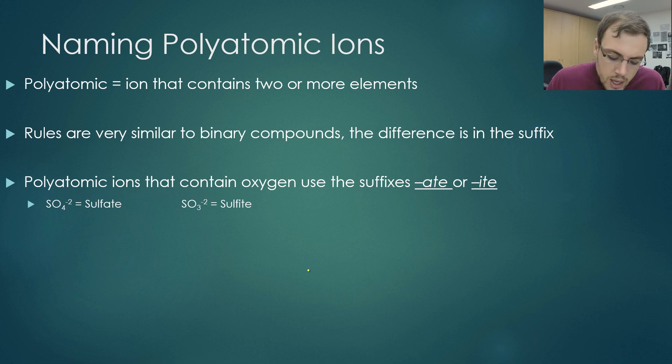If we have a polyatomic ion that contains, for example, oxygen, it can contain the suffix -ate, or -ite. Whether we use -ate, or -ite, depends on the molecule. For example, we can see sulfur, it can be bound to either SO4, so four oxygens, but it can also exist bound to three oxygens.